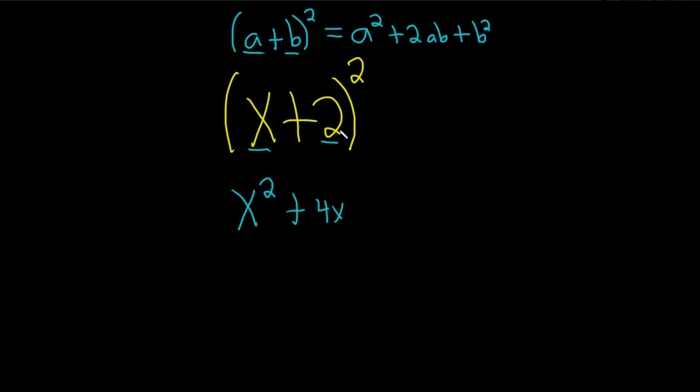You see, 2X, and then double it. So 4X, and then you square the last one, so 2 squared is 4.